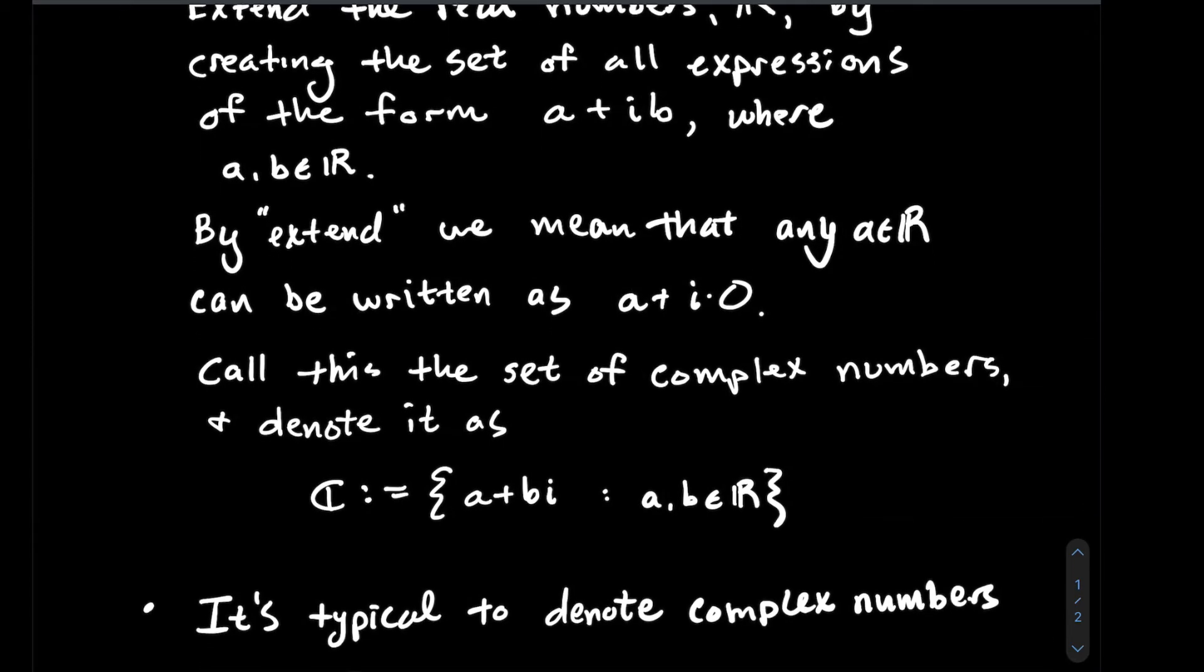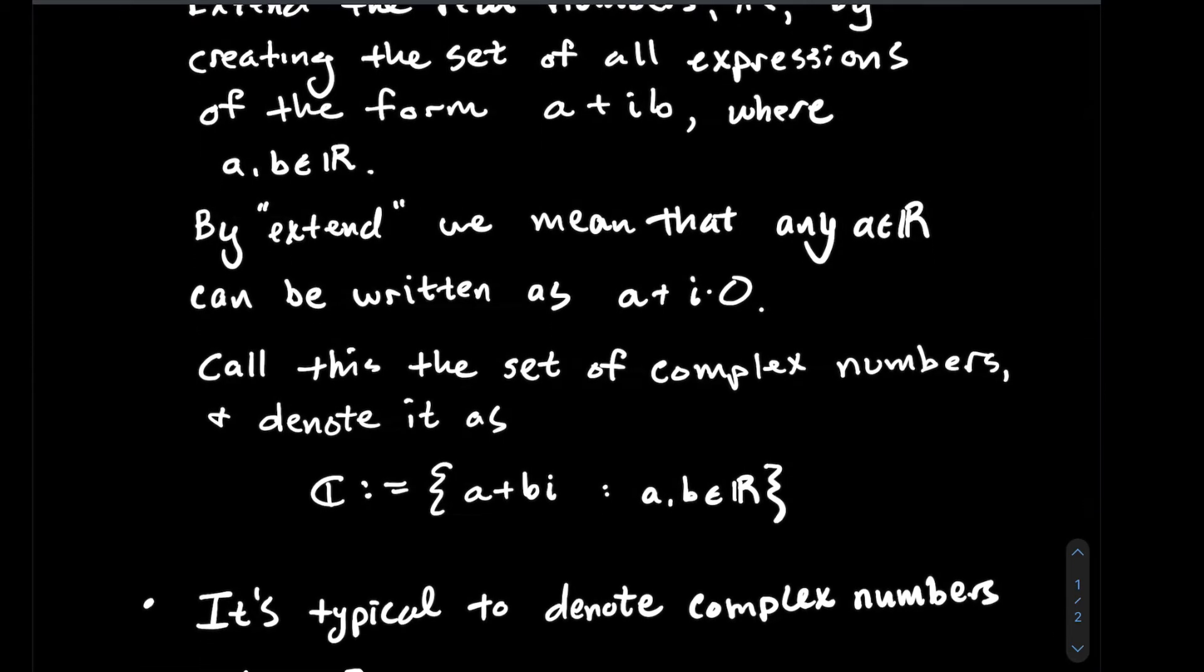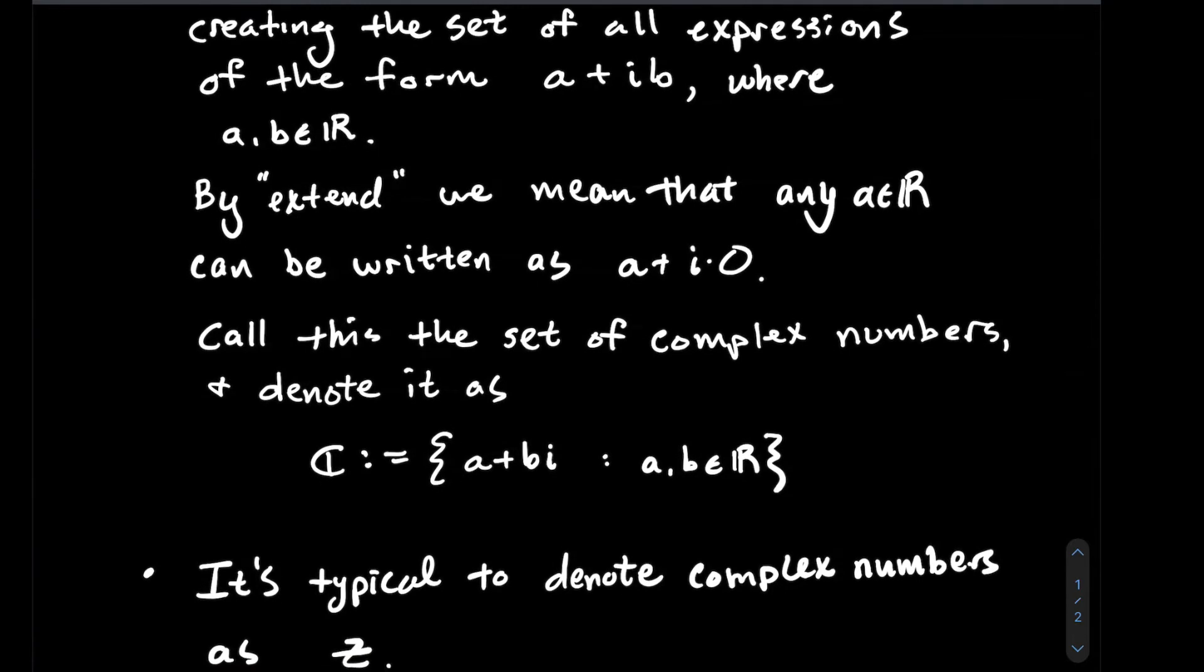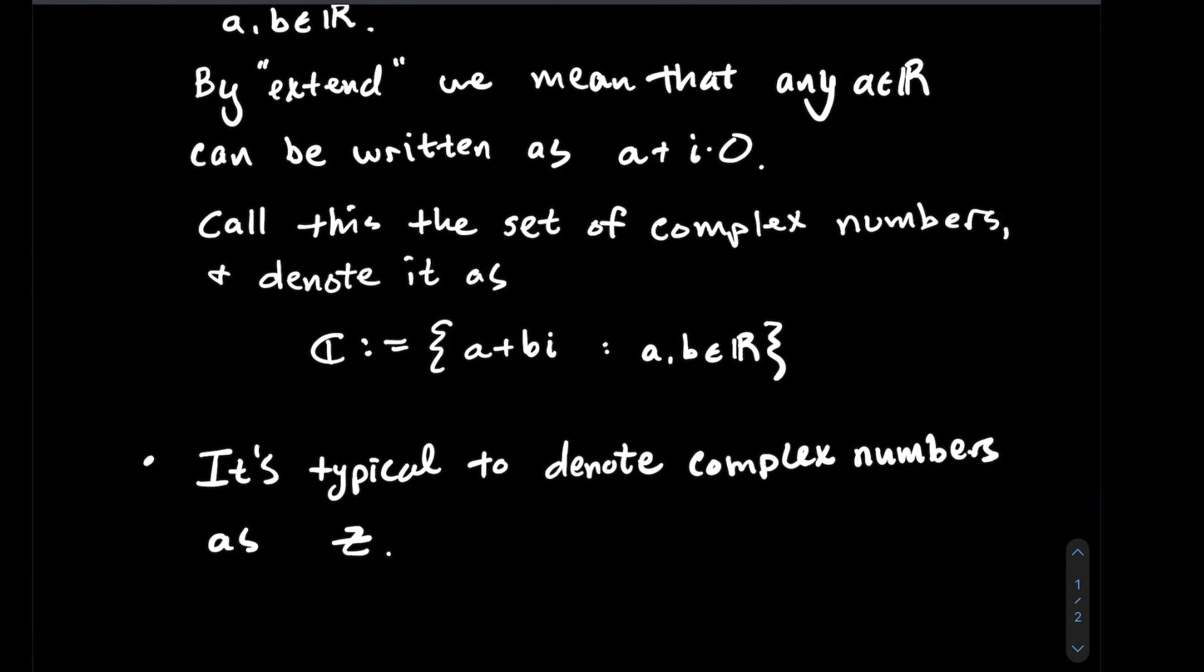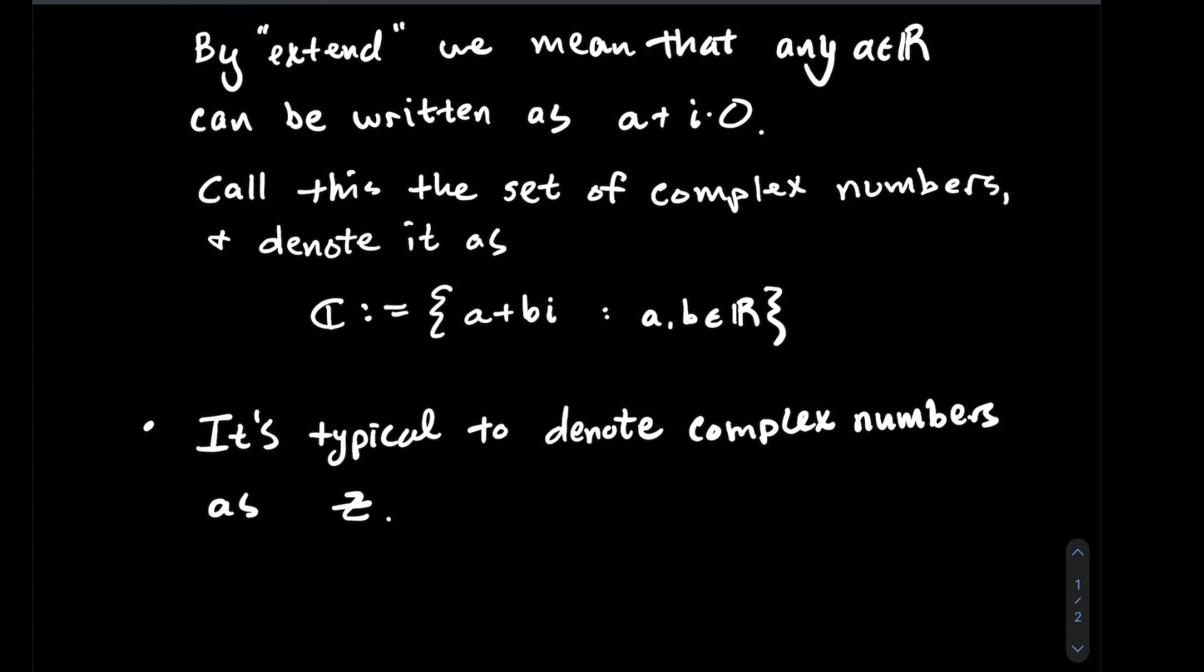It's typical to denote complex numbers as z. You're used to using x's and y's to graph things, so in these videos when you see a z, you can take for granted that's going to be a complex number.